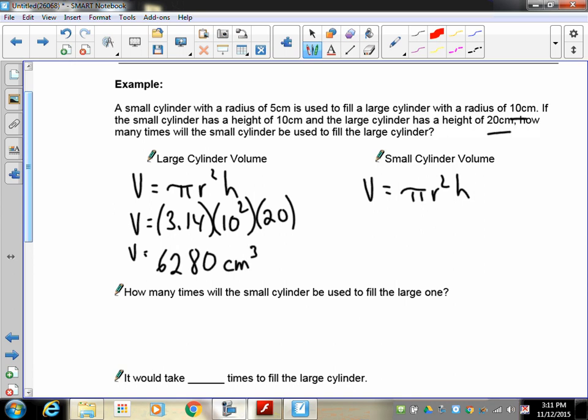Now let's take a look at the next one. The small cylinder has a radius of 5. And a small cylinder has a height of 10. So again, volume is equal to 3.14. The radius is 5 squared. And the height is going to be 10.